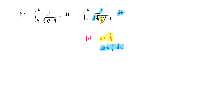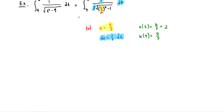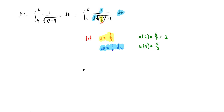At this point we have to remember that we also have to change our boundaries. When t is equal to 6, our u is equal to 6 over 3, or 2, so our upper bound is 2. And similarly, when t is equal to 4, u is equal to 4 thirds. So our new boundaries are from 4 thirds to 2. Let's rewrite our integral: this integral becomes the integral from 4 thirds to 2 of 1 over the square root of u squared minus 1 du.